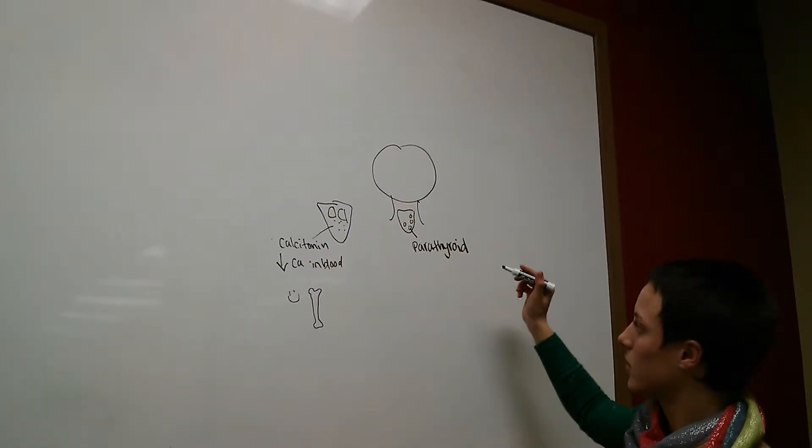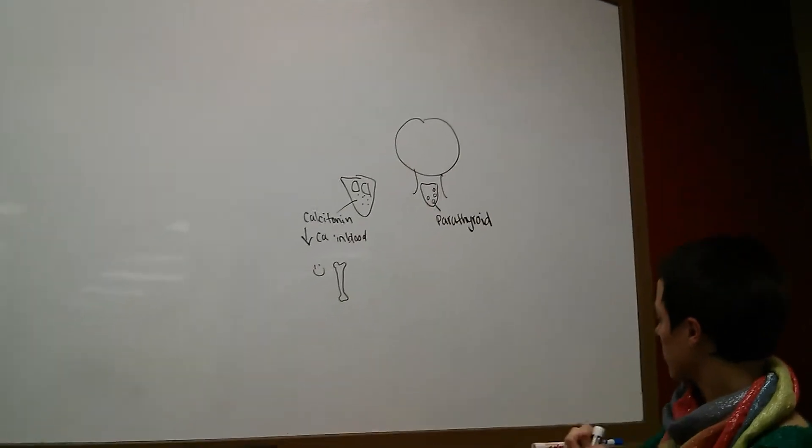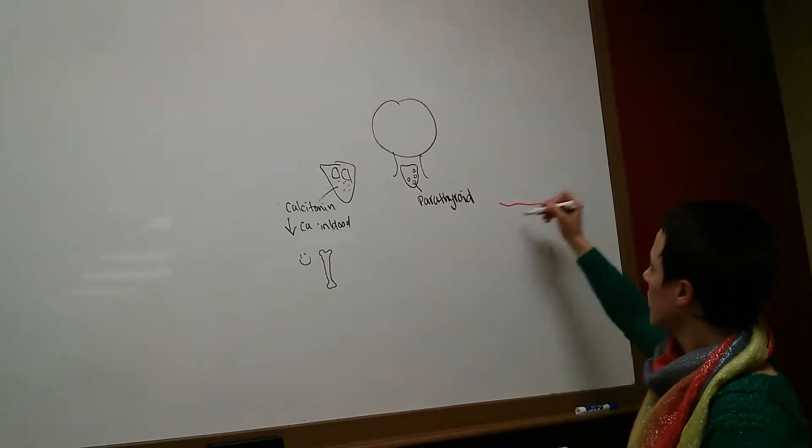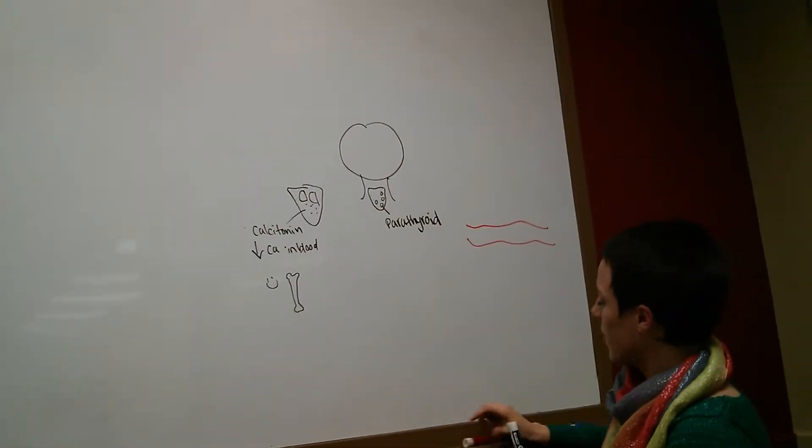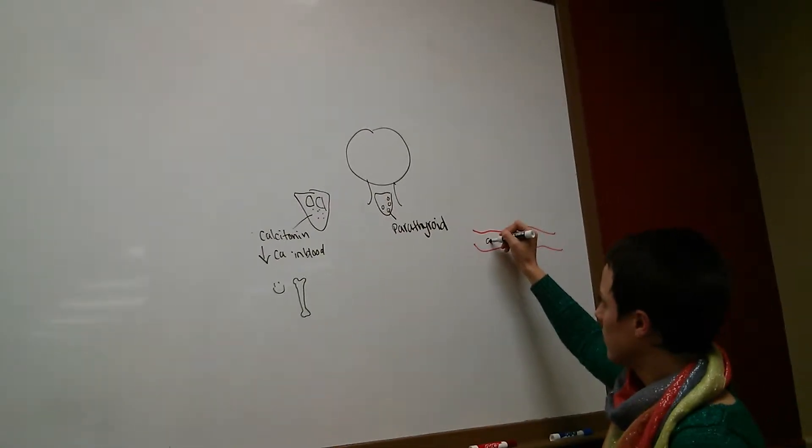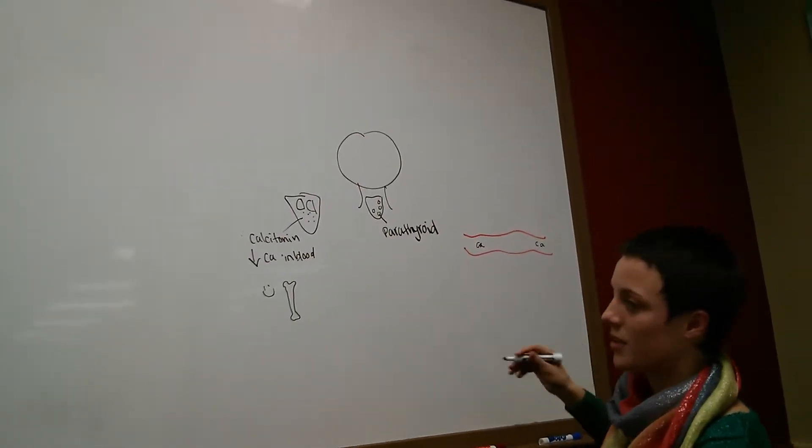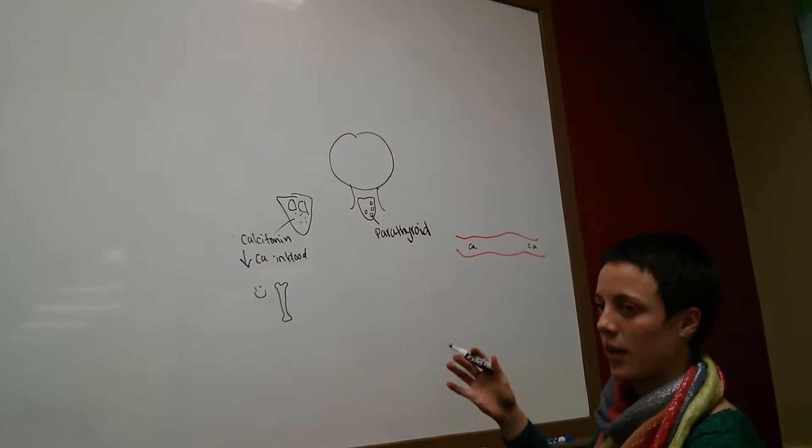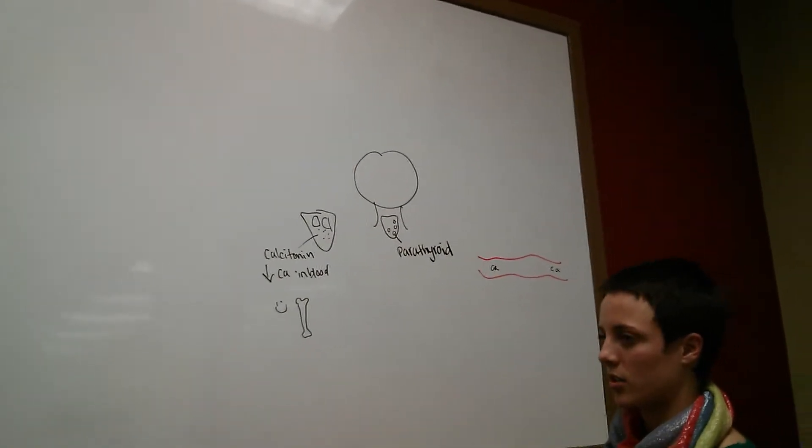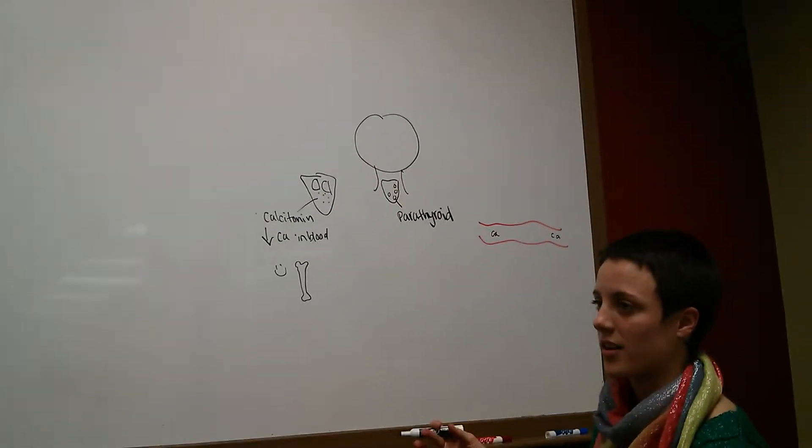Parathyroid glands do the opposite. When there's not enough calcium in the bloodstream, and it needs more, because it needs to maintain that homeostasis of the concentration of the correct amount of calcium in the blood.